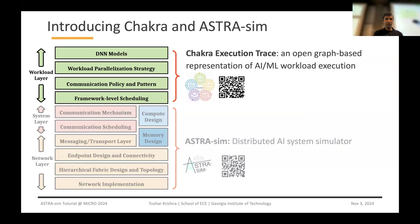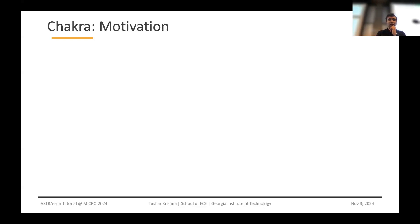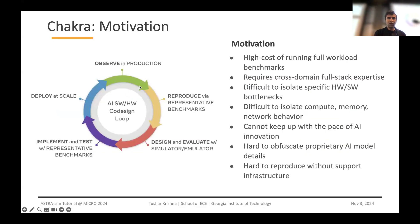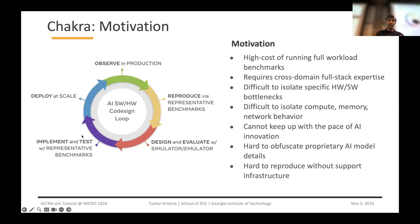Let me give a quick high-level preview of Chakra before we go into a deeper dive in the next talk. The motivation of Chakra comes from the observation that co-design is a continuous cycle. Chakra, in Sanskrit, actually means wheel. Typically, you have models deployed in production, you reproduce them via representative benchmarks, identify bottlenecks, come up with new systems, and design and evaluate them in a simulator or emulator — maybe a new NPU architecture, fabric architecture, or switch architecture. Once designed and evaluated, you implement and test with representative benchmarks, build a system, deploy at scale, and the cycle continues.